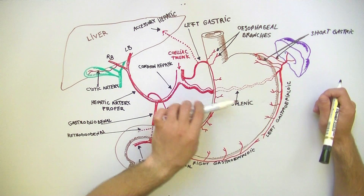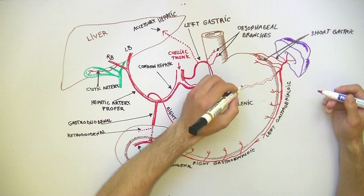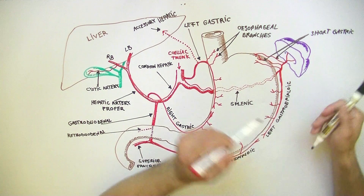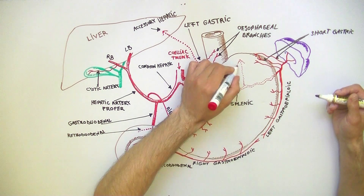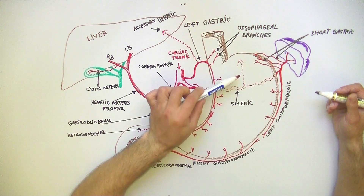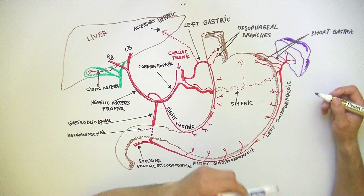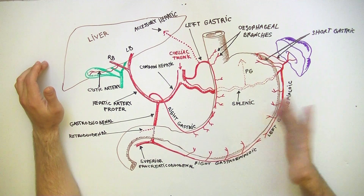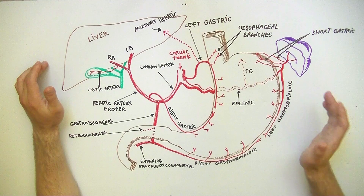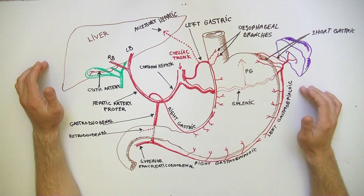Sometimes from the splenic artery, behind the stomach, can arise the posterior gastric artery, which is directed upwards and participates in supplying the fundus of the stomach. So those are the arteries which are supplying the stomach. I hope this drawing was useful for you. See you next time. Bye!